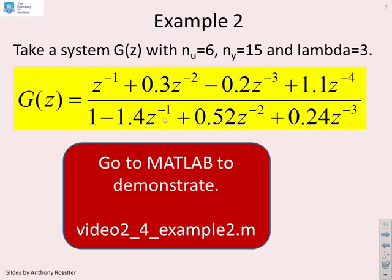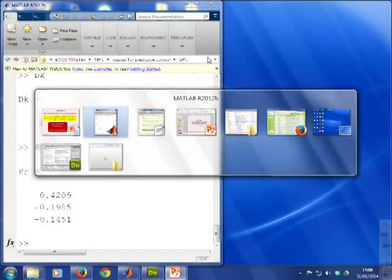Second example. What if you had a slightly different system here? You can see we've got four coefficients in the numerator, four coefficients in the denominator, different N_u, different N_y. So can we do that one?